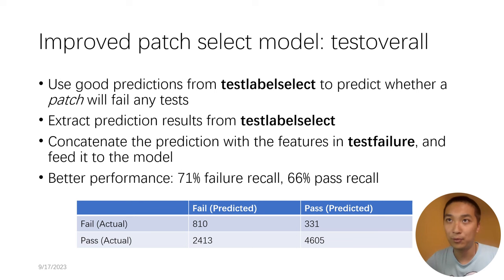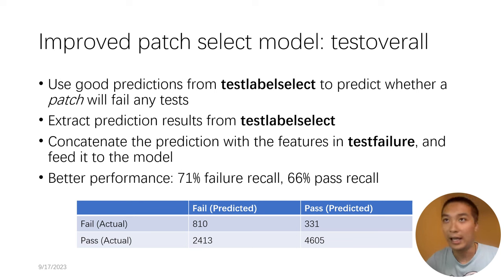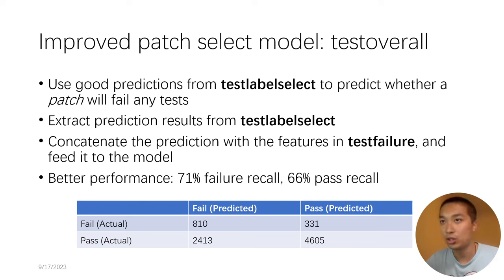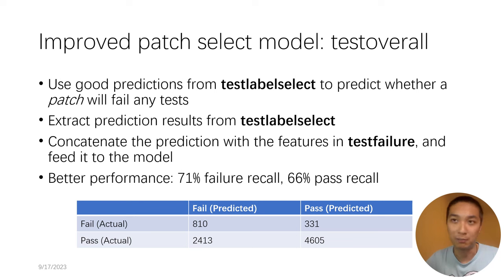To improve the Test Failure model's performance, a third model — Test Overall — is introduced by using predictions from Test Label Select. Since Test Label Select achieves high accuracy, its predictions are concatenated with the original features from Test Failure and treated as new input to Test Overall. The performance is improved, however it is still far from satisfactory.